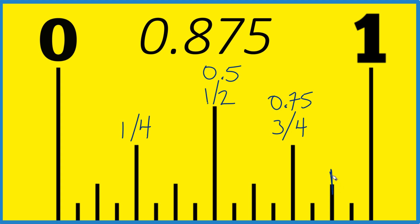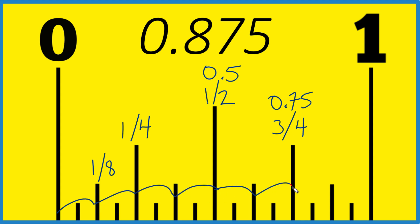So what is this right here? If we cut our one-fourth in half, we get one-eighth. So a distance like this is one-eighth. We're going to count over: two-eighths, three-eighths, six-eighths, seven-eighths.